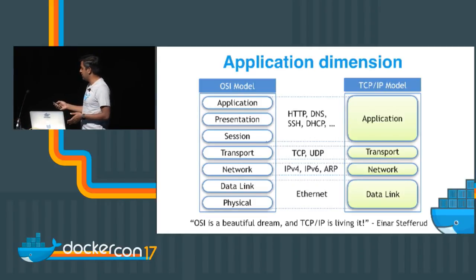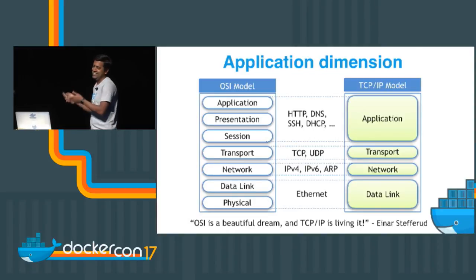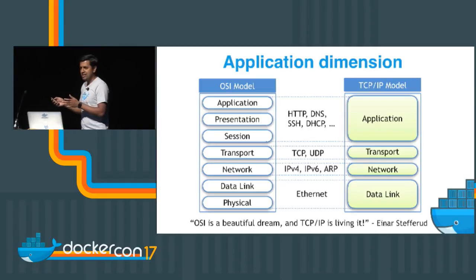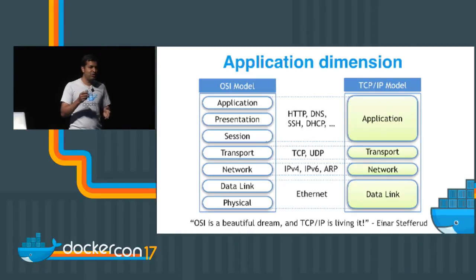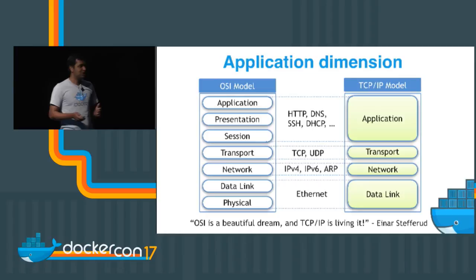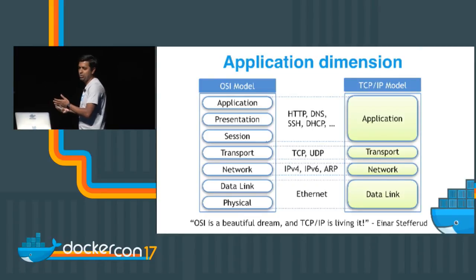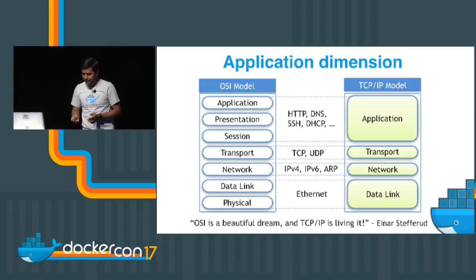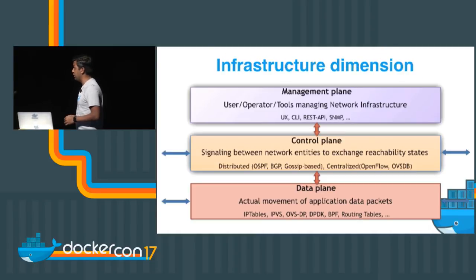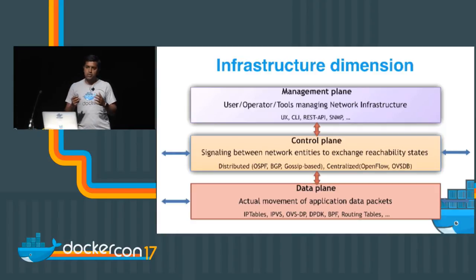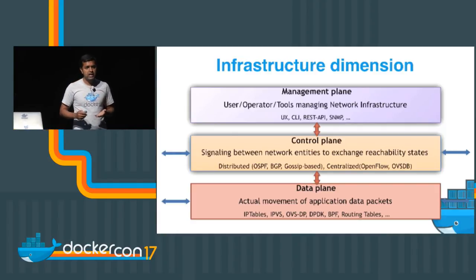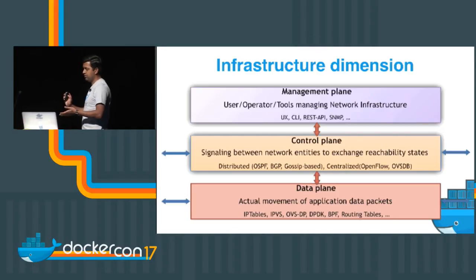One thing to pay attention to is the coloring scheme. I add a lot of color in this talk because it's going to be a deep dive going across layers and planes. When you see the green color, you should assume I'm talking about the application dimension. Next comes the infrastructure dimension. When applications view networking through the OSI layer, network operators — those who actually manage networks — see it in a different dimension.